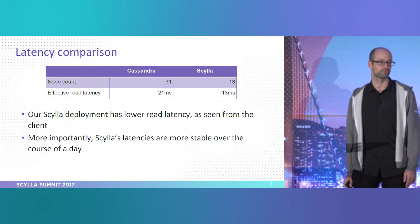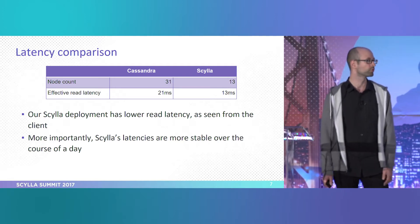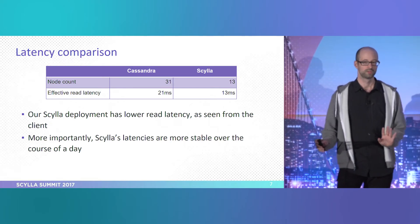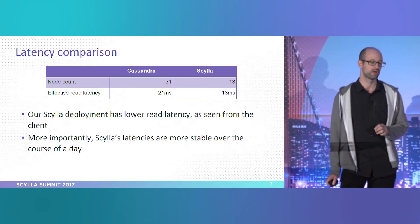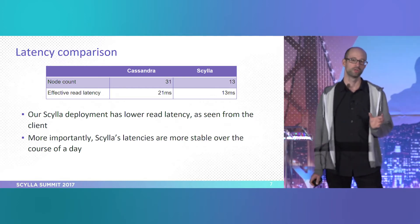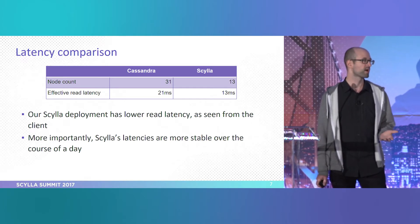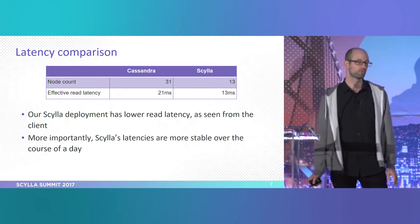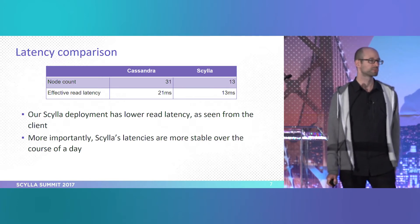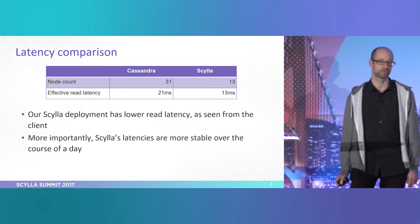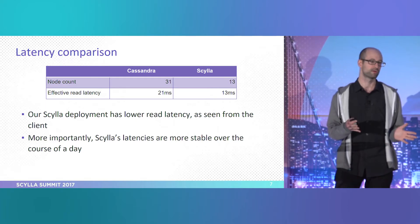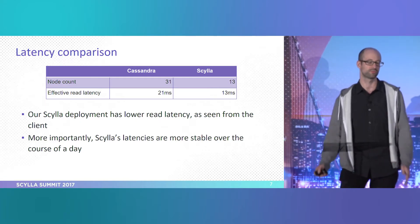As you know, averages are not a very good way to talk about latency performance, but this gives a slight idea. This is not the average latency over a whole day — it's over an hour during our peak time. Using Scylla, we have a clearly lower average latency than we had using Cassandra, and without doing much tweaking. The entire stack on both sides is very comparable.